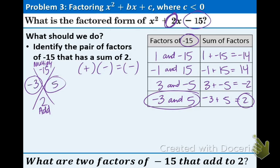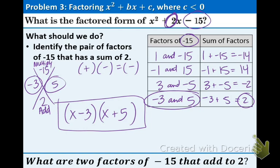Awesome. Take those numbers and put them in parentheses. X always goes first. Take the negative 3, bring it down. And take the positive 5, bring it down. And, there we go. We have the factored form. It is x minus 3 quantity times the quantity x plus 5.